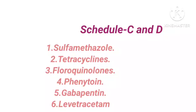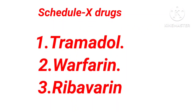The last concept covers schedule X drugs — those that are totally contraindicated. Note that tetracycline is actually schedule C or schedule T, not schedule X. Schedule X drug examples are tramadol, warfarin, and ribavirin. Tramadol is a morphine-type painkiller — we never prescribe it in pregnancy. Warfarin is an anticoagulant and ribavirin is also an antiviral. These drugs lead to dangerous fetal abnormalities far outweighing their therapeutic uses, so they are banned under schedule X.